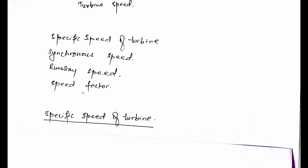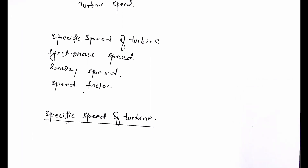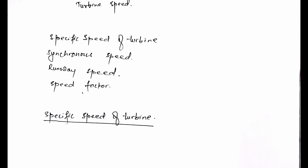The specific speed of a turbine is the speed at which the machine produces one horsepower under one meter head. It is an important parameter for the design of the turbine, as it includes all three basic parameters: speed, power, and head of the turbine.